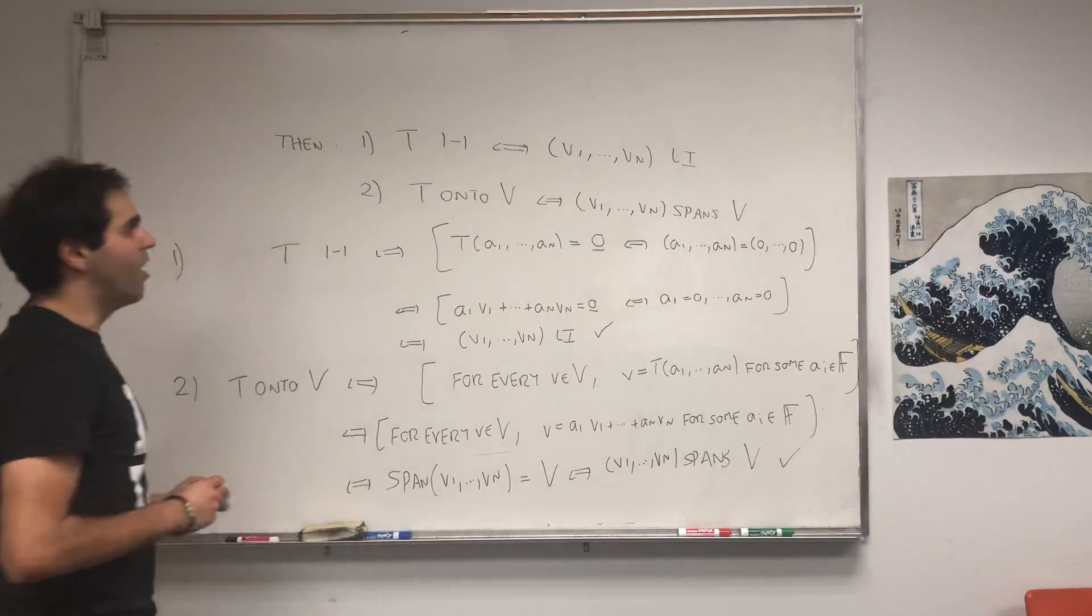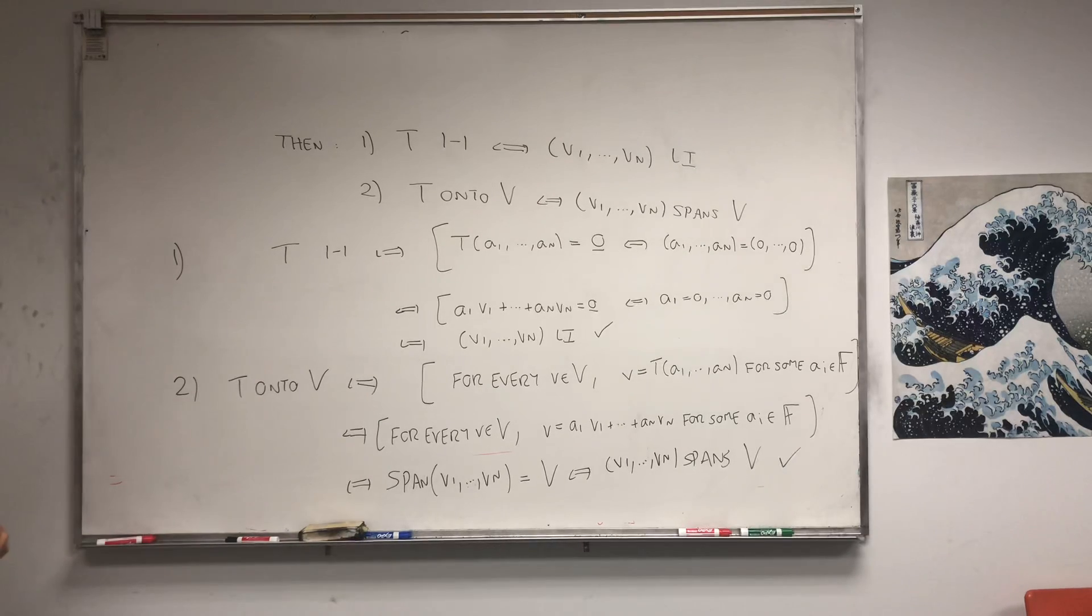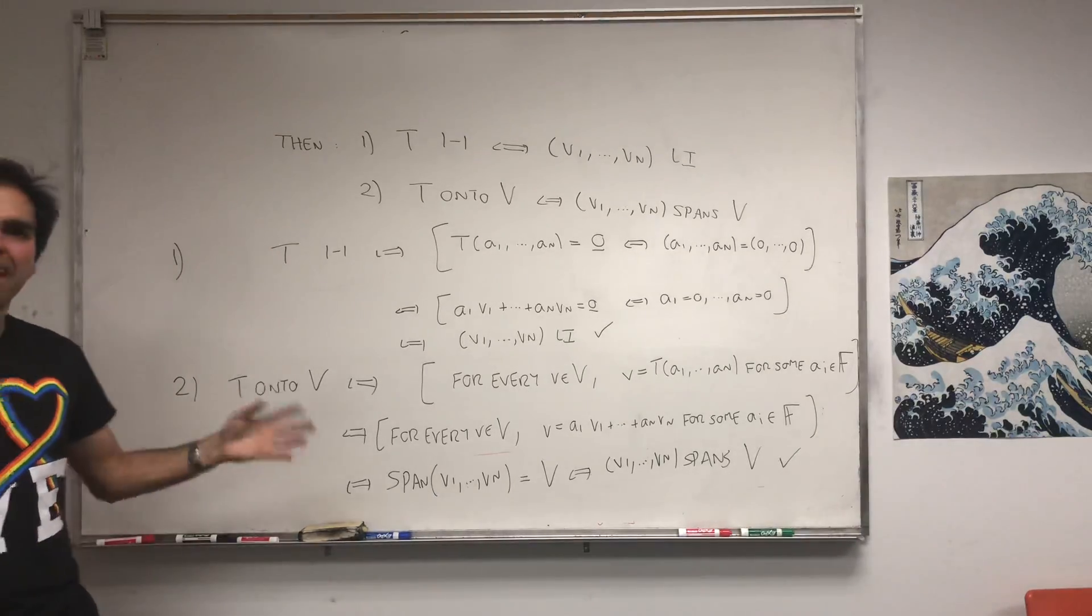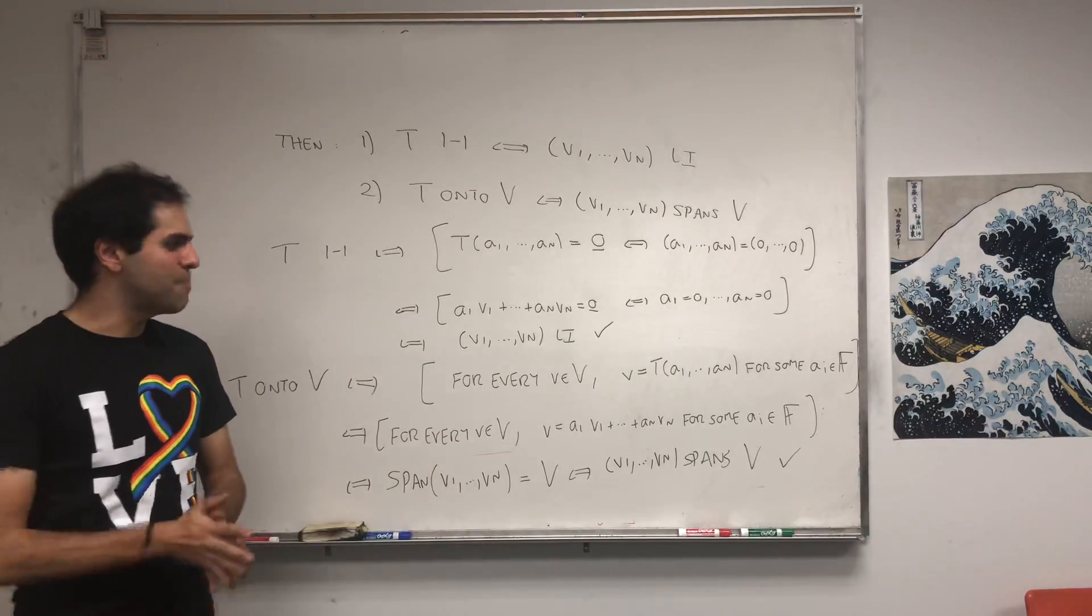And we're done. So onto is the same as spans in this case, and 1 to 1 is the same thing as linear independence. Which is, again, another beautiful thing that relates 1 to 1 onto linear independence and span.